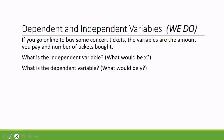Here's a question to do together on dependent and independent variables. If you go online and buy some concert tickets — say, some Wiggles tickets — the two variables at play are the amount of money you pay and the number of tickets you bought. Which one is independent and which one is dependent? Which one relies on the other? Pause the video, write the example down, and write what you think is the independent variable and what is the dependent variable.